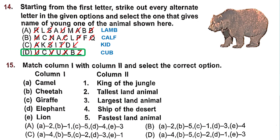Question 15: Match Column 1 with Column 2. Camel is the ship of the desert — A matches 4. Cheetah is the fastest land animal — B matches 5. Giraffe is the tallest land animal — C matches 2. Elephant is the largest land animal — D matches 3. Lion is the king of the jungle — E matches 1. The right option is C.